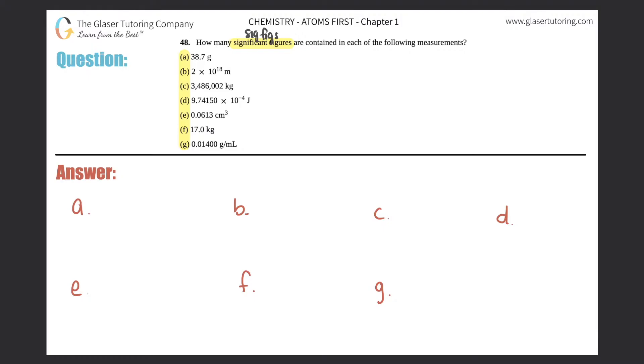Let's start. Letter a: 38.7 grams. Rule number one in sig figs: all non-zeros—literally numbers one through nine—are always significant, means they always count. So here I have a three, an eight, and a seven. Those are the only three numbers, so how many sig figs do I have? I have three. That's easy.